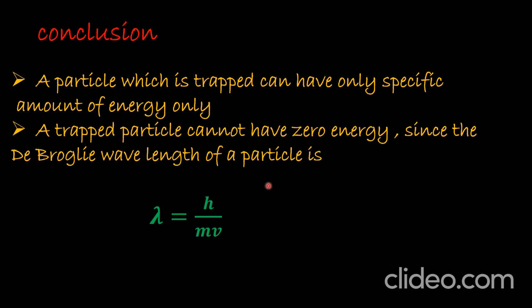The important point here is that classical physics cannot explain why E = 0 is not allowed for a trapped particle — it can be explained only in quantum physics. In classical mechanics, all non-negative energies including zero are allowed. These two are the important conclusions we consider for a particle trapped within a box: the energy of the particle is quantized.